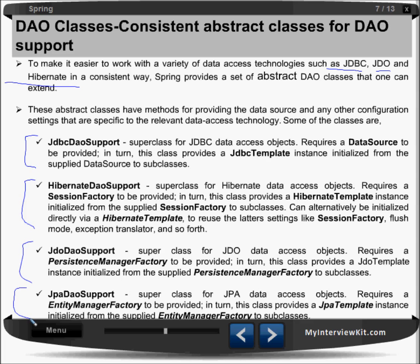JdbcDaoSupport is the superclass for JDBC data access objects. It requires a DataSource to be provided, and in turn provides a JdbcTemplate instance initialized from the supplied DataSource to subclasses. Similarly, HibernateDaoSupport is the superclass for Hibernate data access objects. It requires a SessionFactory to be provided, and in turn provides a HibernateTemplate, which can alternatively be initialized directly by a HibernateTemplate to reuse settings like session factory, flush mode, and exception translator.